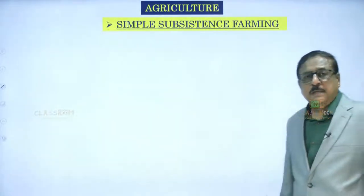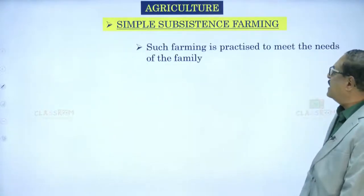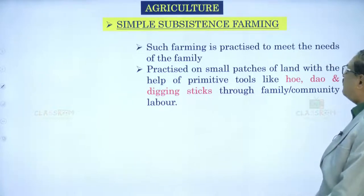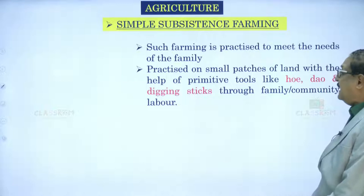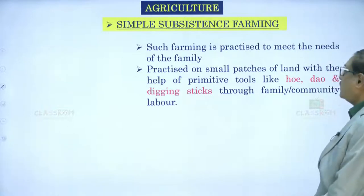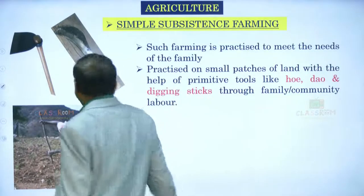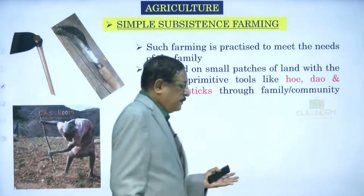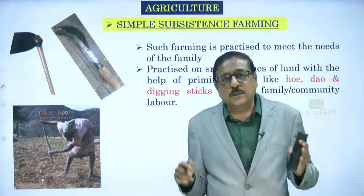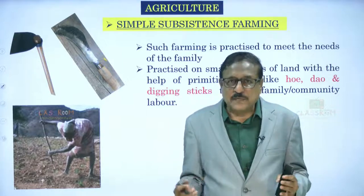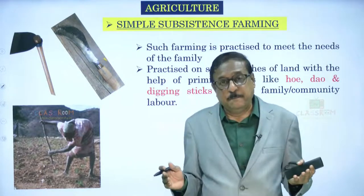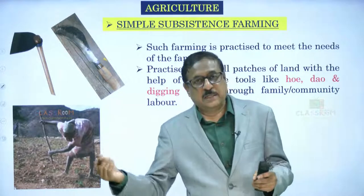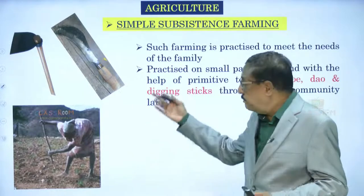Simple subsistence farming is practiced to meet the needs of the family on small patches of land, with the help of primitive tools like the hoe, dao, and digging sticks, and through family or community labor. All members of the family till, sow seeds, water, harvest, and separate the grain. They sell some produce and use that money to buy other necessities for food and living expenses.